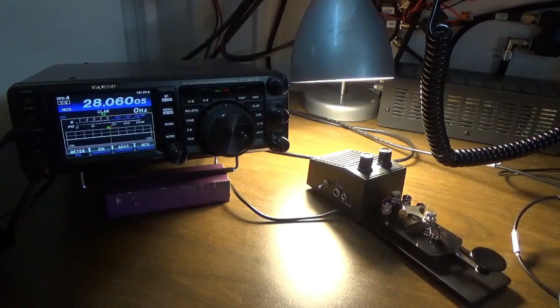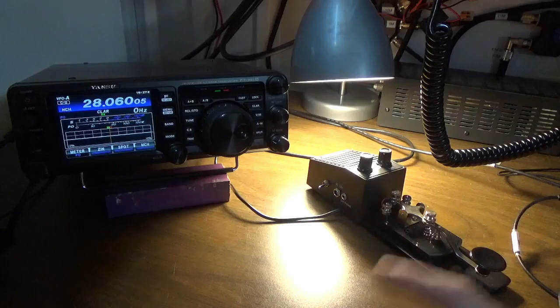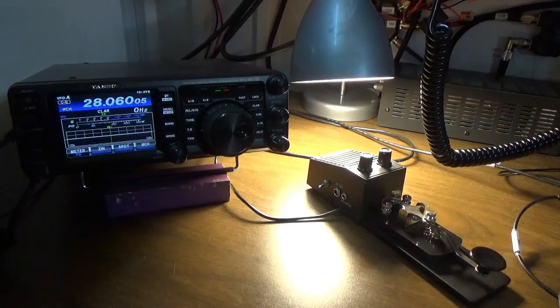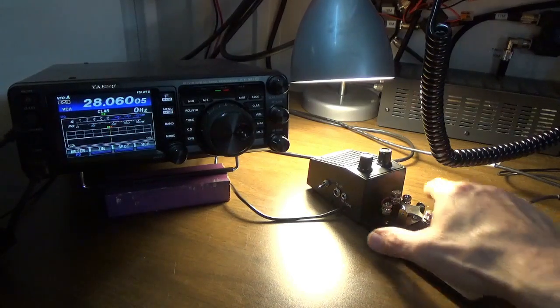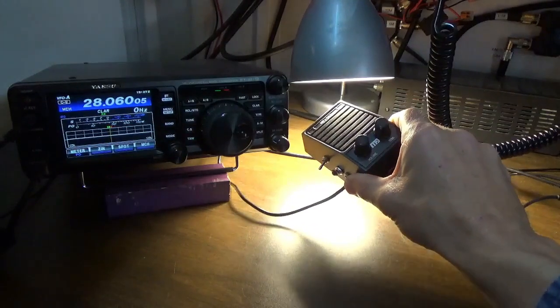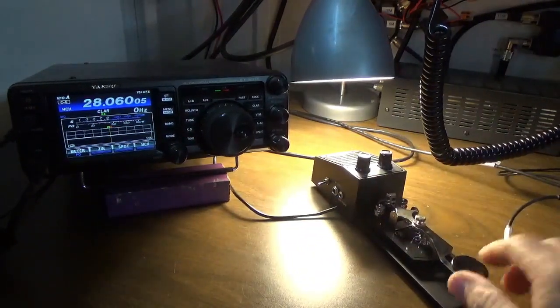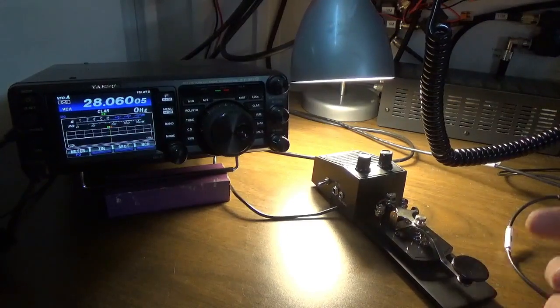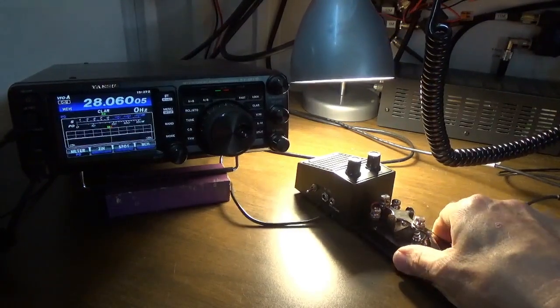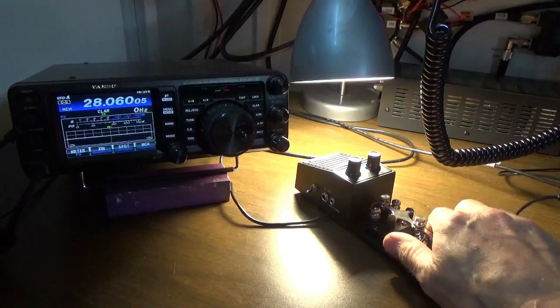We were thinking, I looked at some of the keys. Some of them were pretty, I don't want to say cheap, they were just light, not very heavy. One of the things about this MFJ-557 is it's heavy and it doesn't go anywhere. You can sit here and bang on this thing all day long and it's like a brick. It's really, really good quality.